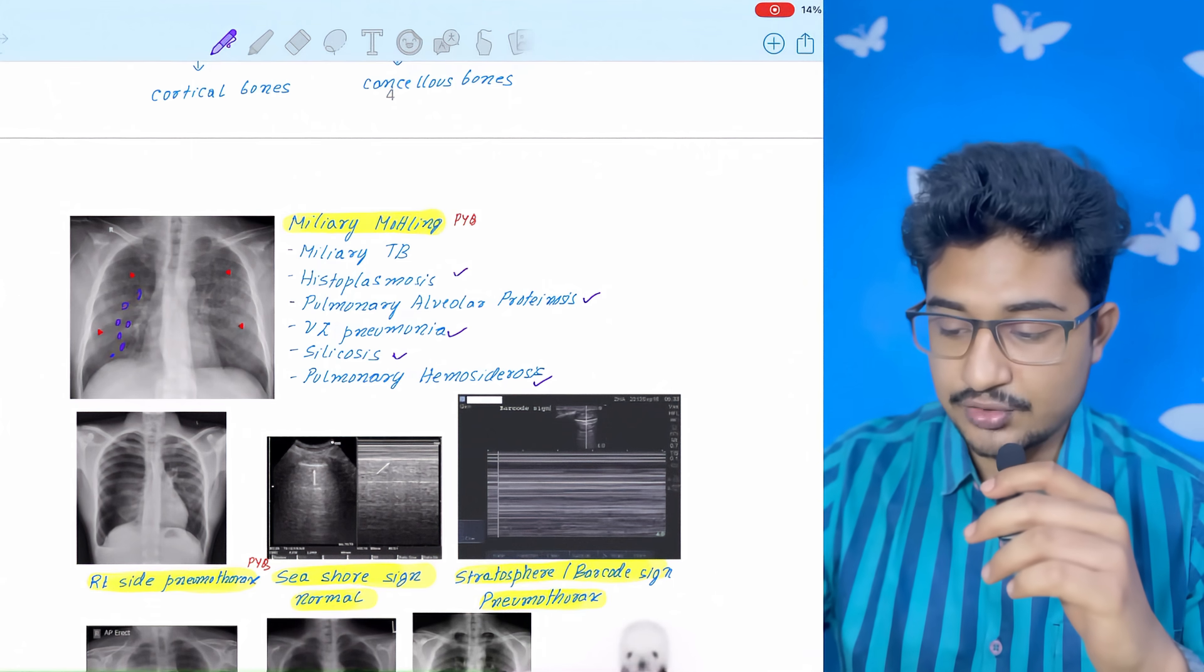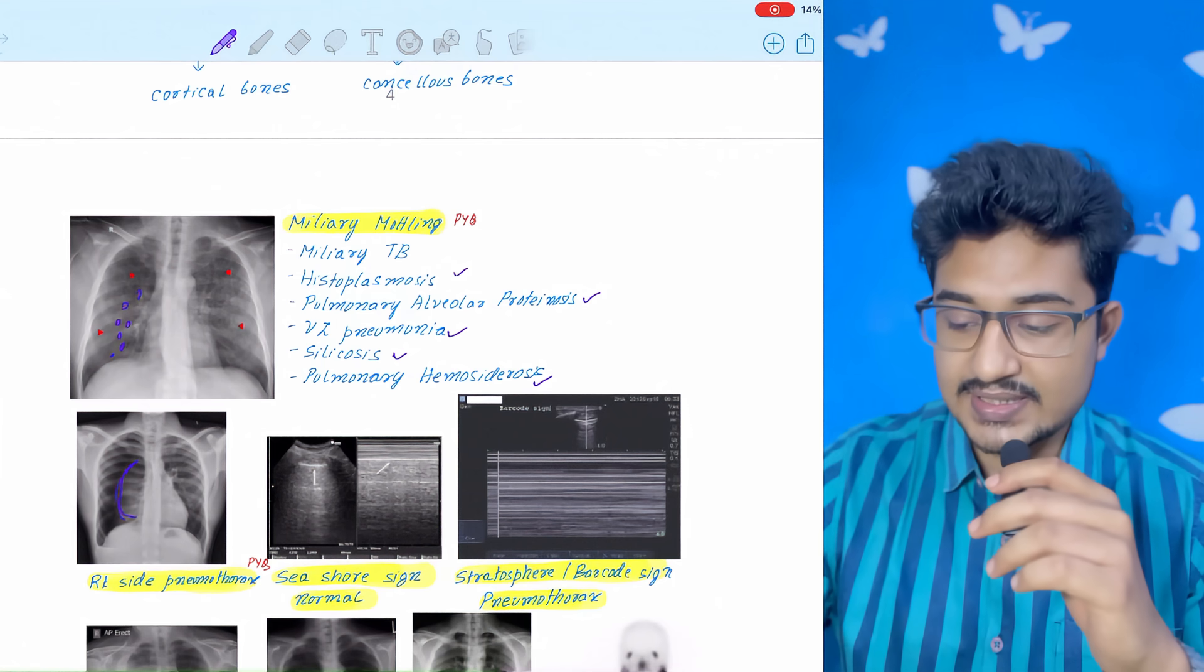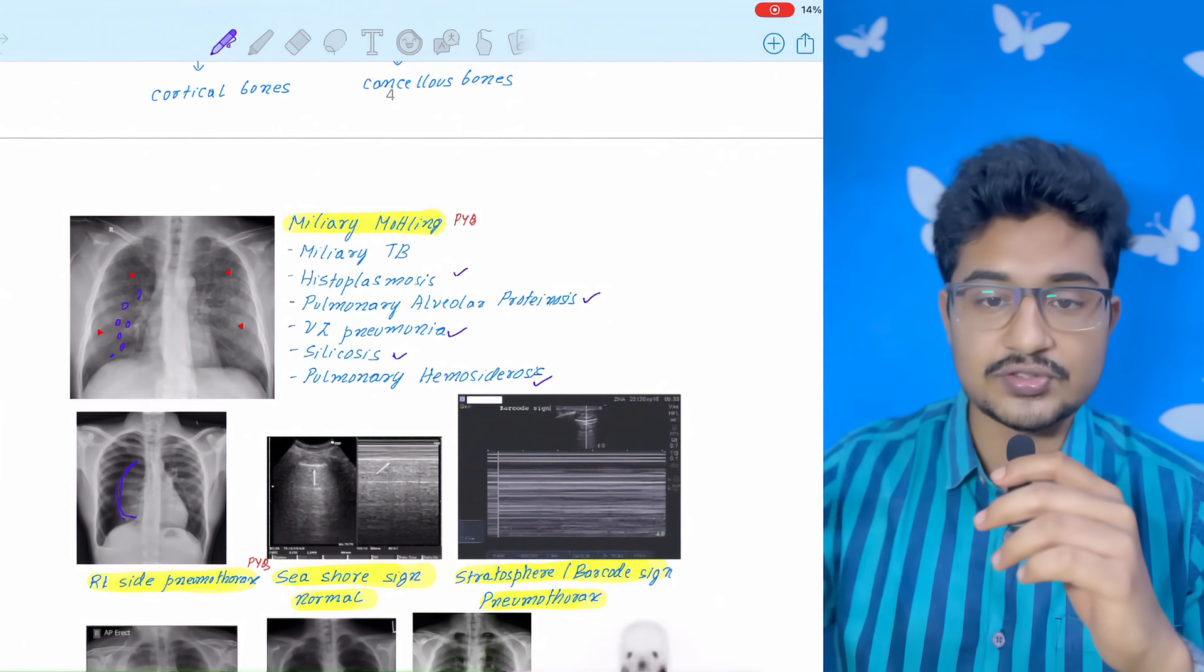This is a right-sided pneumothorax. Hyperlucency, and you can see the collapsed lung also present there.